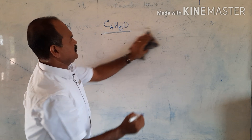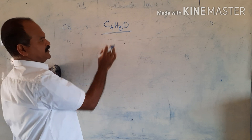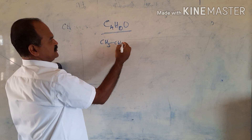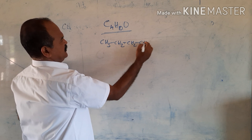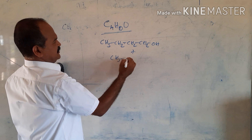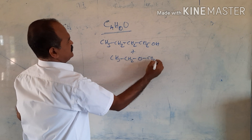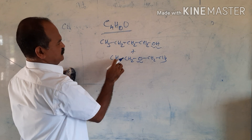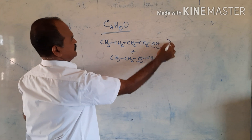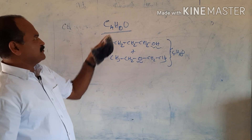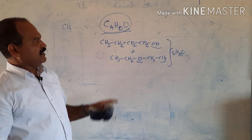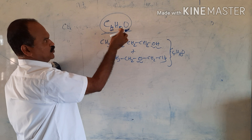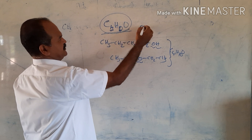Consider the molecular formula C4H10O. This formula can represent different functional group isomers.